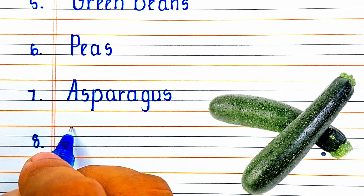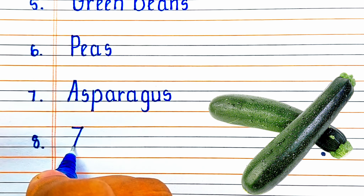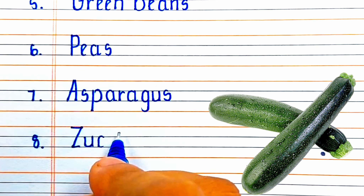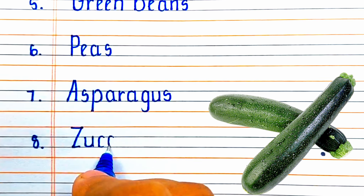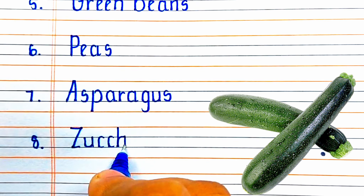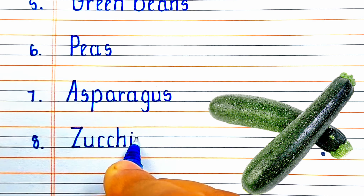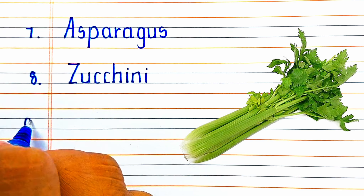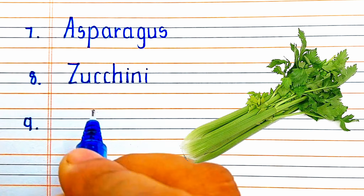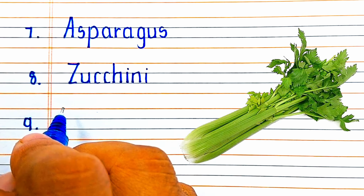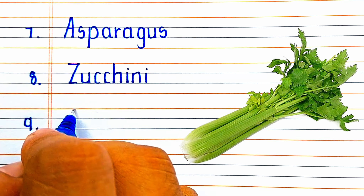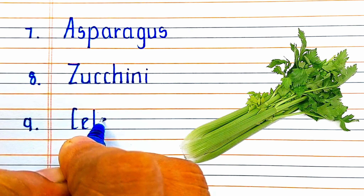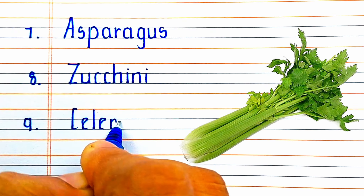Next vegetable is Z-U-C-C-H-I-N-I, Zucchini. Next is C-E-L-E-R-Y, Celery.